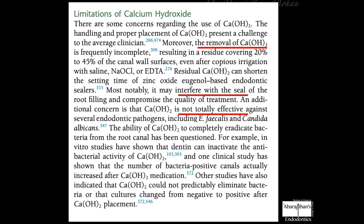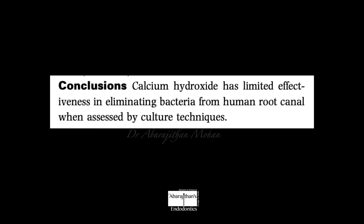Calcium hydroxide is mainly used for antibacterial efficacy, but studies have clearly proved it is not effective especially against bacteria supposed to cause root canal failure. The efficacy is questionable because dentin can buffer and inactivate the antibacterial activity of calcium hydroxide. Some studies have even found that the bacterial count actually increased after placement. The conclusion is that calcium hydroxide has very limited effectiveness in eliminating bacteria, so if you think it gives you a bacteria-free canal, you need to change your mind.